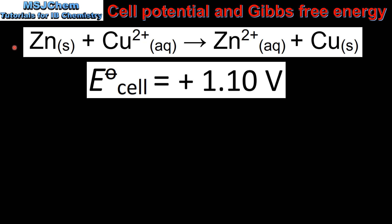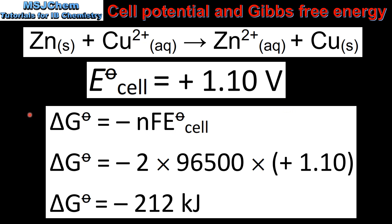Let's look at an example. In the previous video we calculated the cell potential for this reaction and we got a cell potential value of positive 1.10 volts. Next we'll use this equation to calculate the change in Gibbs free energy. The moles of electrons transferred in the reaction is 2, and the Faraday constant has a value of 96,500.